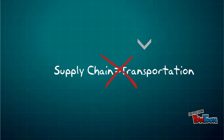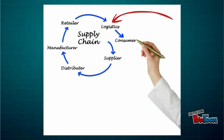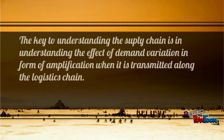Generally, people think supply chain simply means transferring material from one location to another — that is the function of logistics. But logistics is only a part of supply chain, not the complete supply chain. It's like seeing only the tail of an elephant. There is much more complexity involved. The key to understanding supply chain is understanding the effect of demand variation.